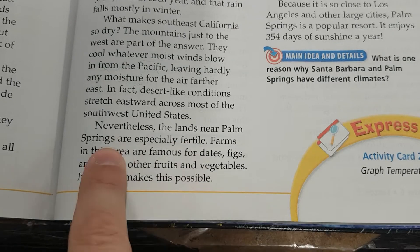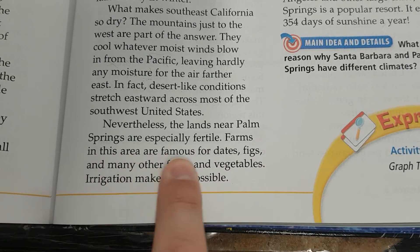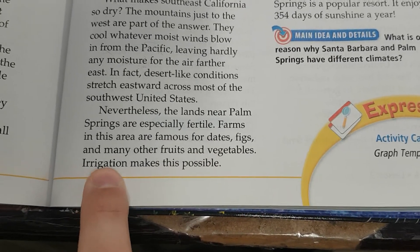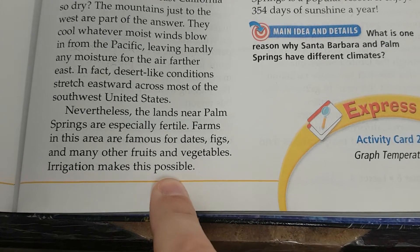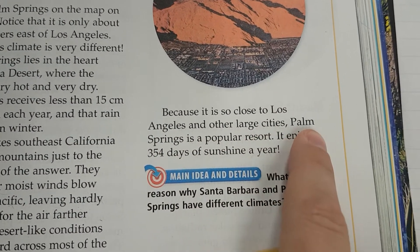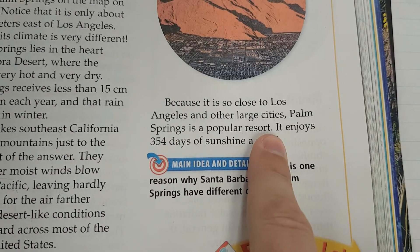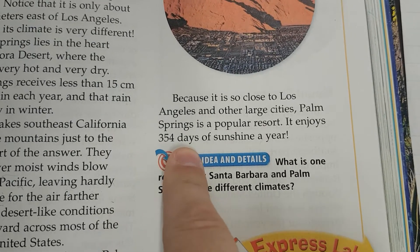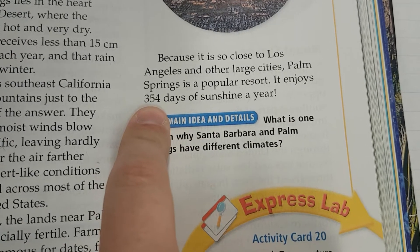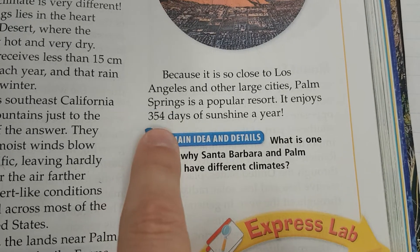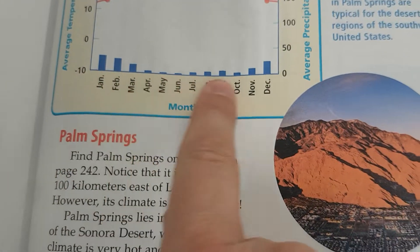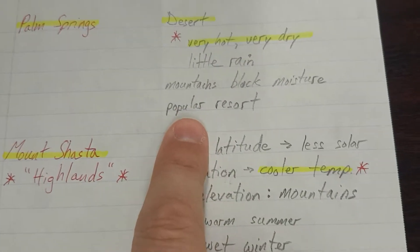Nevertheless, the lands near Palm Springs are especially fertile. Farms in this area are famous for dates, figs, and many other fruits and vegetables. Irrigation makes this possible. Because it is so close to Los Angeles and other large cities, Palm Springs is a popular resort. It enjoys 354 days of sunshine a year. So there are 365 days in a year. That's only 11 days that it rains. Very little rain. Popular resort.